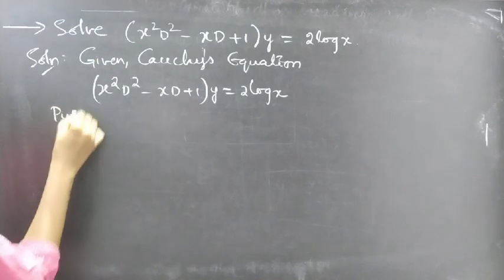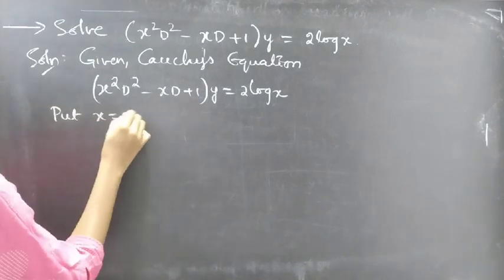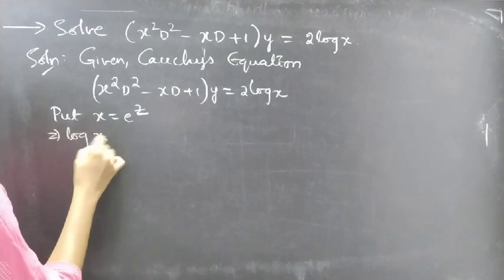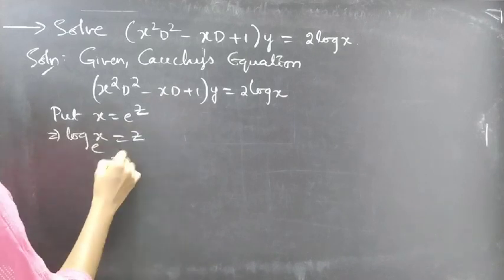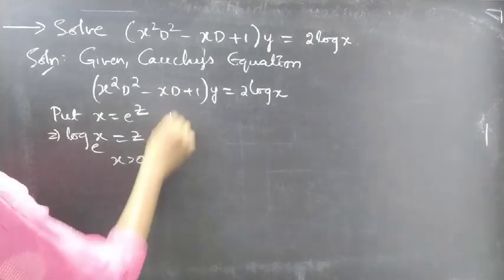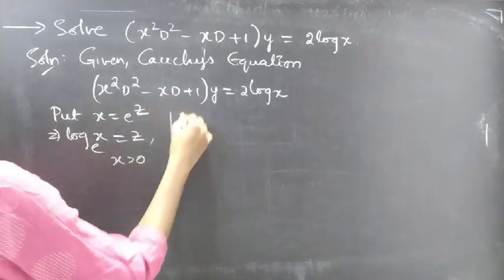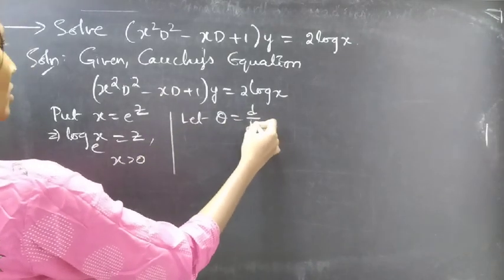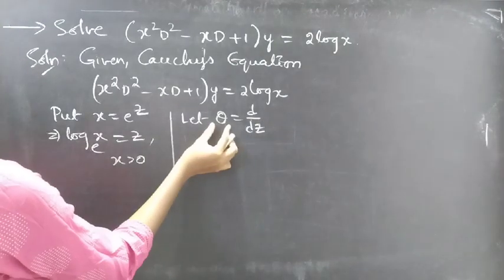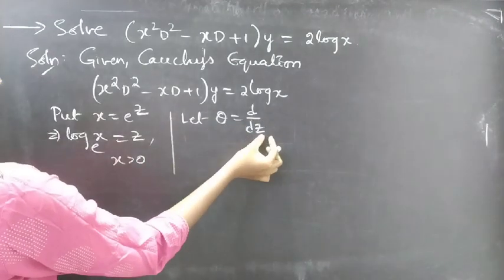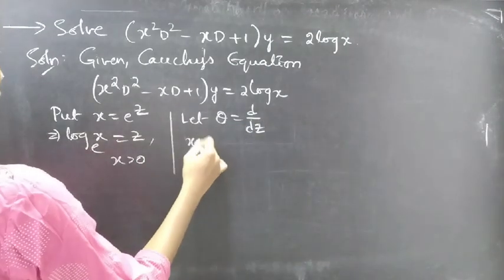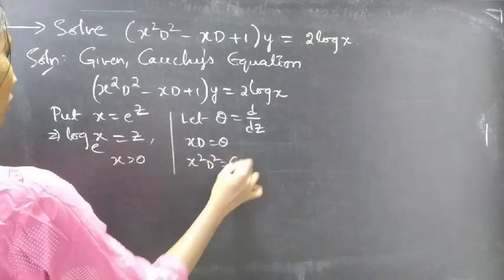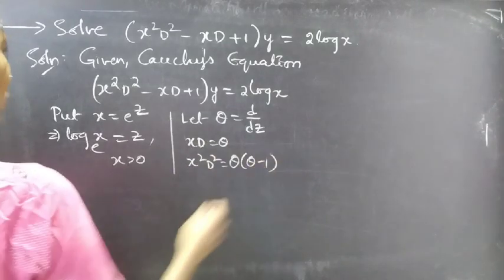Now put x equals e to the power z, then log x to the base e equals z for x greater than 0. Let theta equal d by dz, where theta is a differential operator with independent variable z. Then x D equals theta, and x squared D squared equals theta times (theta minus 1).